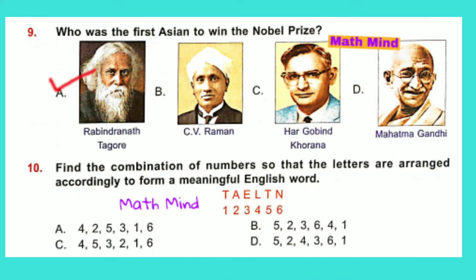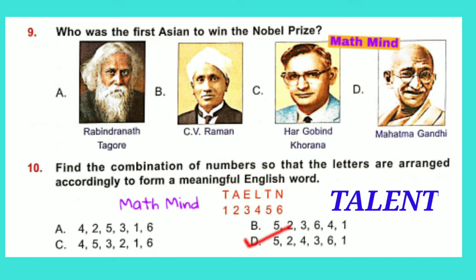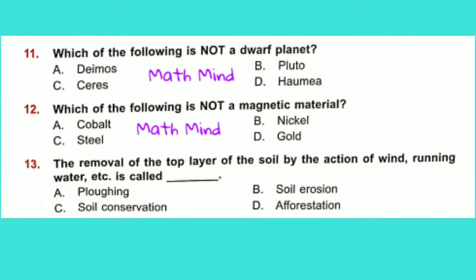Question No. 10: Find the combination of numbers so that the letters are arranged accordingly to form a meaningful English word. Option D is correct. The word formed is TALENT: T-A-L-E-N-T. Question No. 11: Which of the following is not a dwarf planet? Option A is correct: Demas.